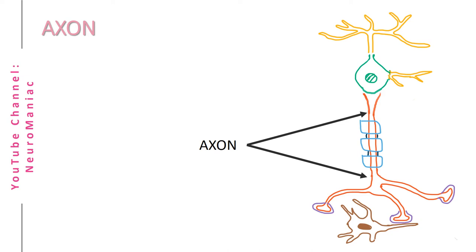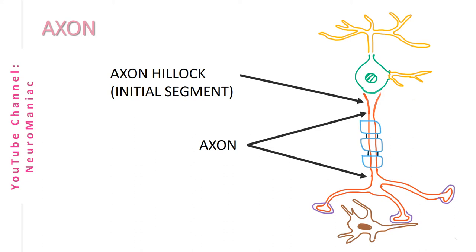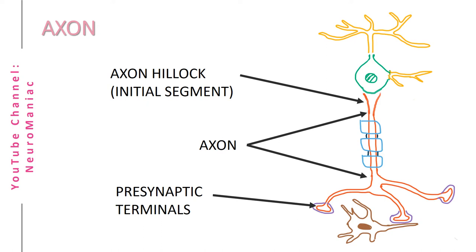...the axon hillock, via a process known as depolarization. As you can see, the axon hillock is slightly wider than the rest of the axon and connects to the soma. In fact, did you know axons of the sciatic nerve can be over a meter long? Wow!